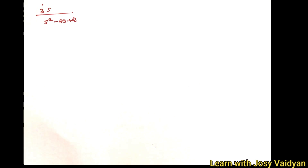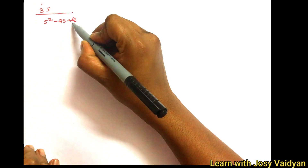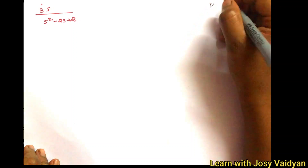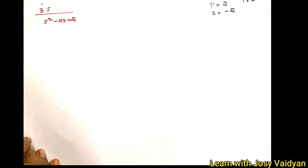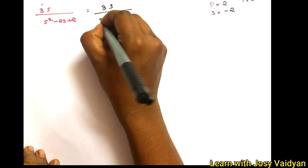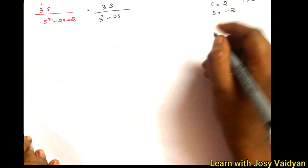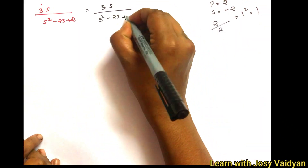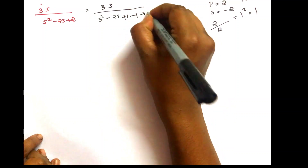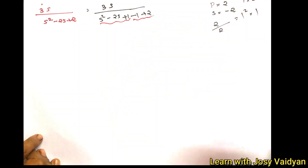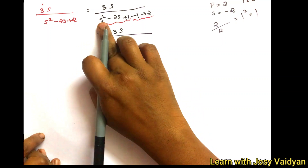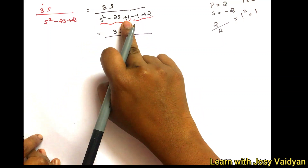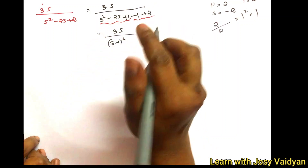Now we have 3s divided by s squared minus 2s plus 2. We need to complete the perfect square. The coefficient of s is minus 2; the product is 1 into 2 giving us minus 2. We take half of minus 2, which is minus 1, and square it to get 1. We add and subtract 1 to match the square.